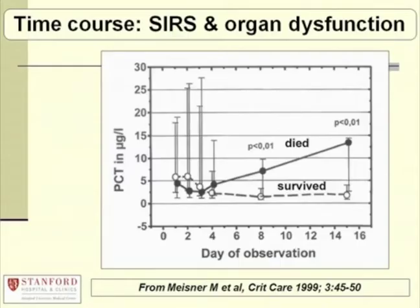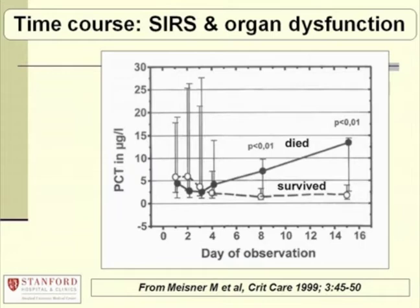I've taken two graphs from articles published by the same investigators who have done a lot of work in PCT. This earlier one, from 1999, shows that the initial procalcitonin was not that helpful in predicting survival in ICU patients — many of whom probably had or developed sepsis, though investigators didn't characterize that. You can see that the initial PCT isn't as helpful as monitoring PCT later on during the patient's hospital stay, at least in terms of predicting survival.